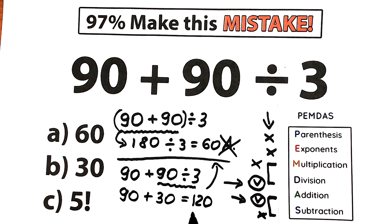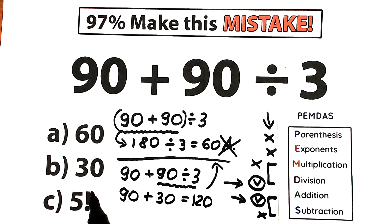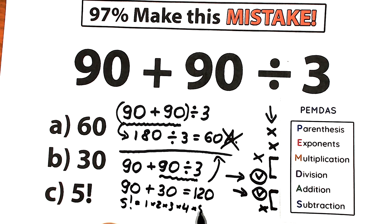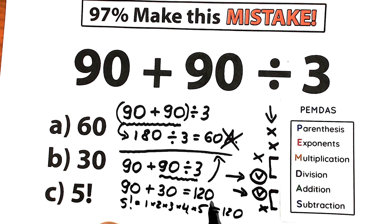The correct answer is 120 — division first, then addition. But which option is 120? We have 60, 30 — those aren't 120. But 5 factorial: 5! is the product from 1 to 5, so 1 × 2 × 3 × 4 × 5. That gives us 6 × 4 = 24, and 24 × 5 = 120. So the correct answer to our question is option C — 5 factorial equals 120.